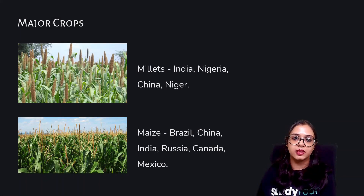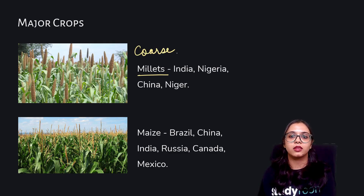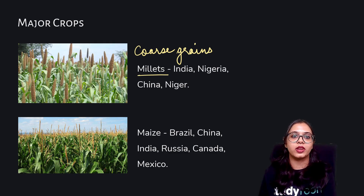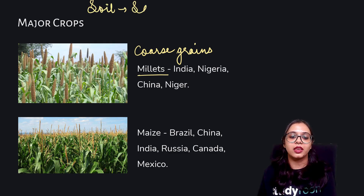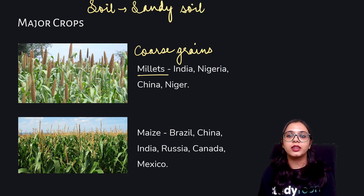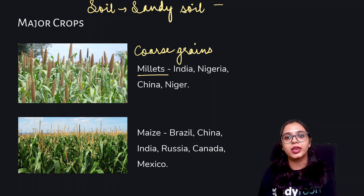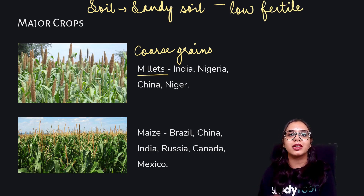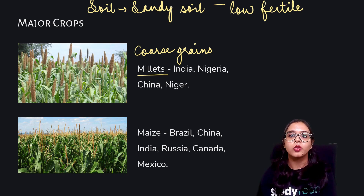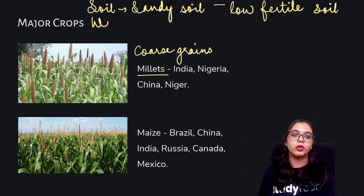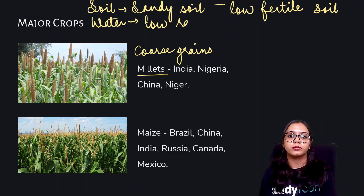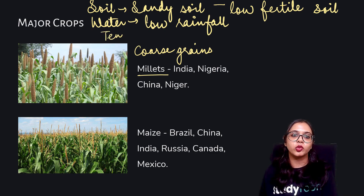The next crop is millet, also known as coarse grain. The kind of soil these coarse grains require is sandy soil. Since sandy soil is not very fertile and is porous in nature, we can conclude that millets require low-fertility soil for their growth. When talking about water content, there should be low rainfall, because sandy soil cannot absorb enough water. The temperature should be high to moderate.